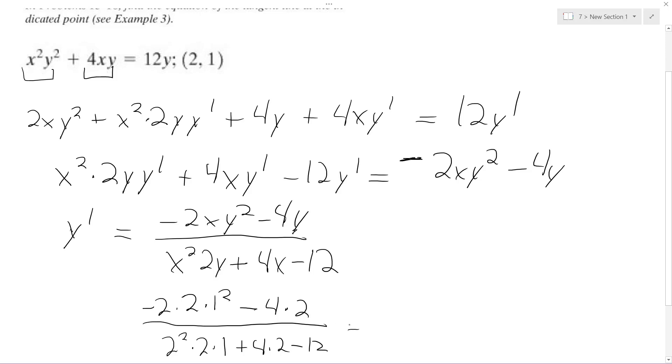And we get negative 4 minus 8 over 4 times 2, which is 8 plus 8 minus 12. So it's 4. That's 4 on the bottom.